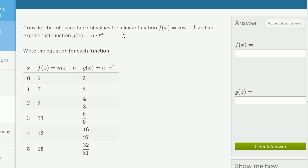Consider the following table of values for a linear function f(x) = mx + b and an exponential function g(x) = a·r^x. Write the equation for each function. They give us for each x value what f(x) is and what g(x) is, and we need to figure out the equation for each function and type them in.